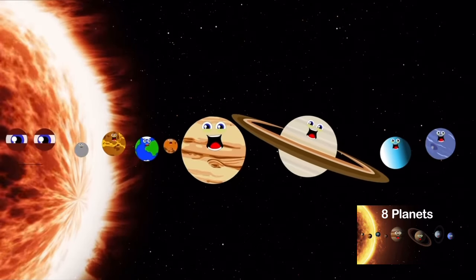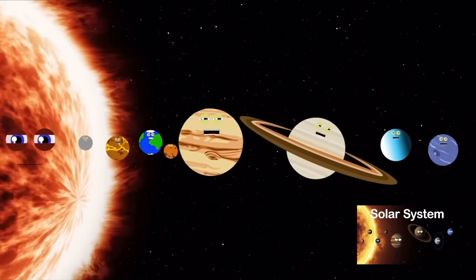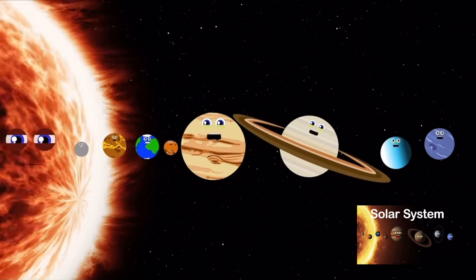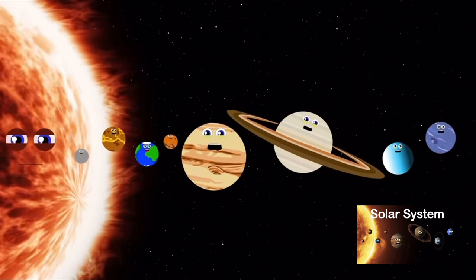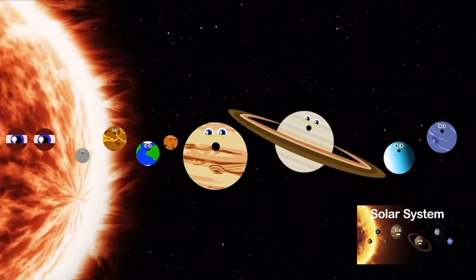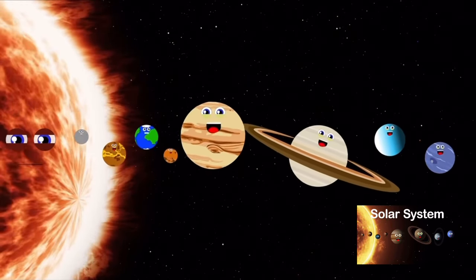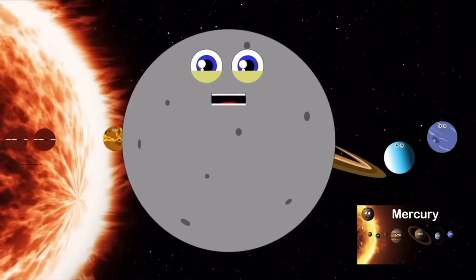There are eight planets in the solar system, and we revolve around the sun. Join us to learn about the different planets, now sing along and have some fun.